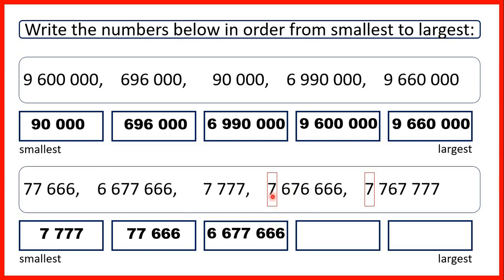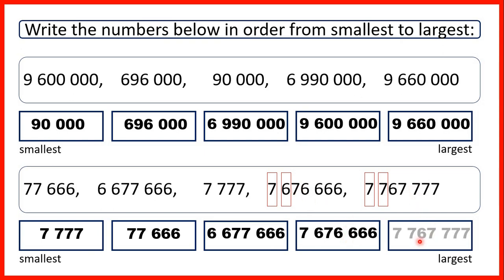Now for these remaining two numbers, because they both have the same number of millions, we look across to our hundred thousands place value. Here we have 6 in the hundred thousands, but here we have a 7. So that means this number here is next smallest, and this number is our largest number.